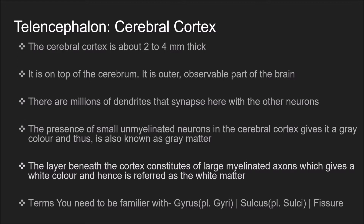The layer beneath the cortex constitutes large myelinated axons which gives a white colour, and hence is referred to as white matter.